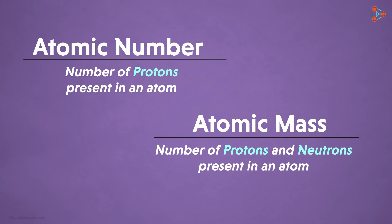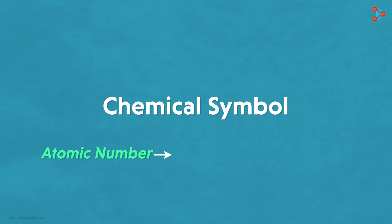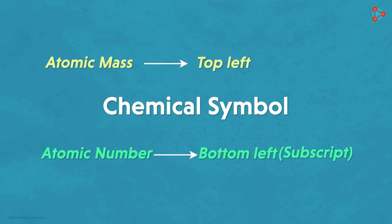So when we have to represent both these entities for an element, how do we write it? Is there a specific way for representing it? Yes! The chemical symbol of the element is written with atomic number at its bottom on the left side, that is in subscript. On the other hand, the atomic mass is written on the top left side in superscript.